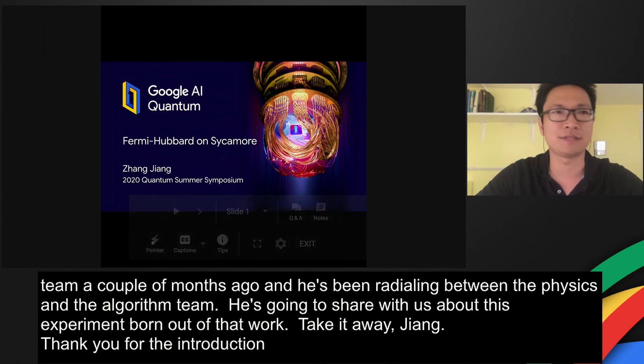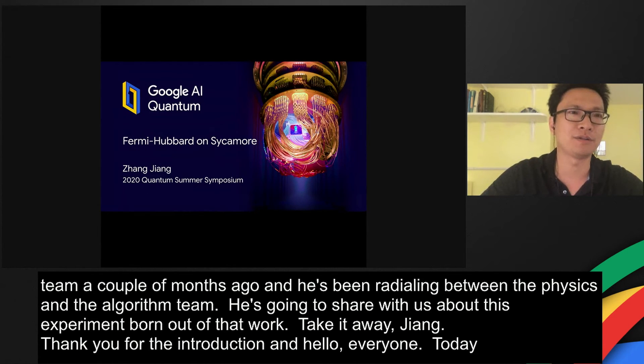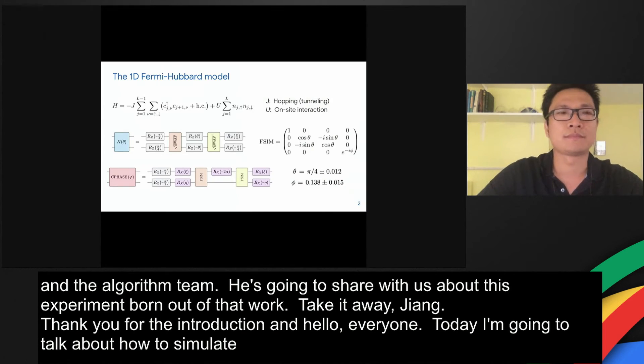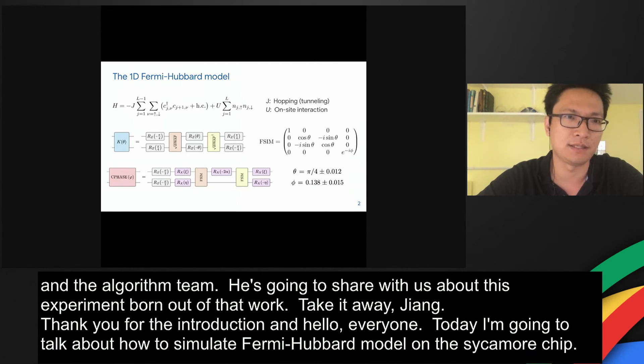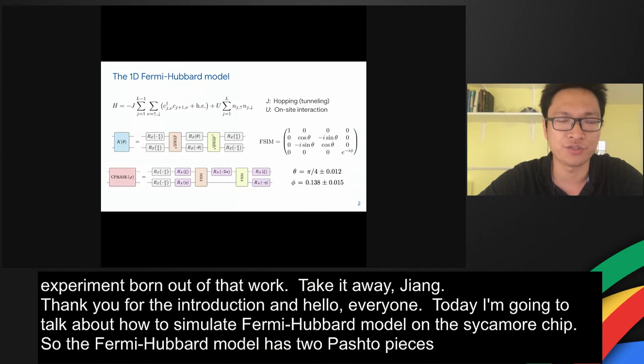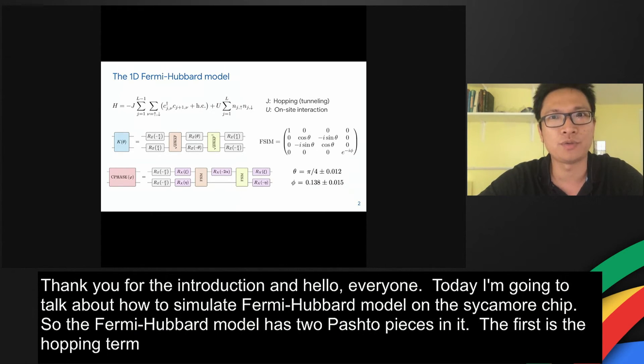Today I'm going to talk about how to simulate the Fermi-Hubbard model on the Sycamore quantum chip. The Fermi-Hubbard model has two important pieces in it. The first is the hopping term, and the second is the interaction term. The competition between these terms makes the Fermi-Hubbard model very interesting in many-body physics. It is used to benchmark many numerical methods, and it is relatively easy to simulate on a quantum computer.